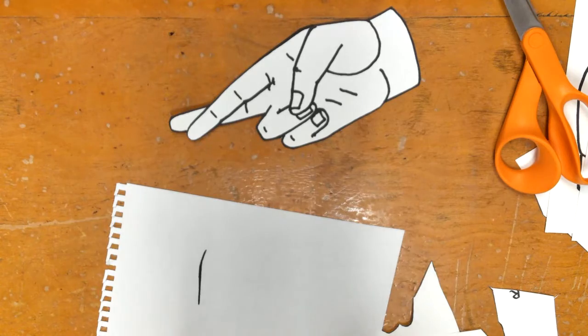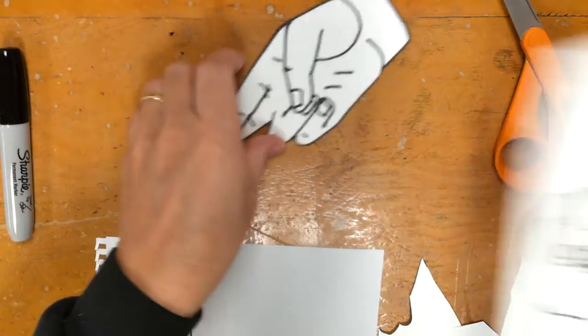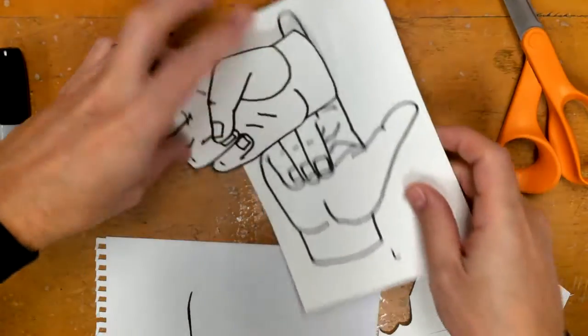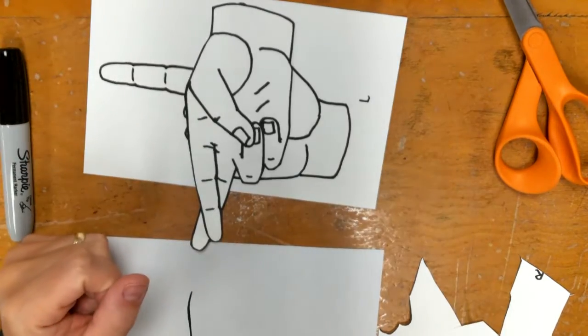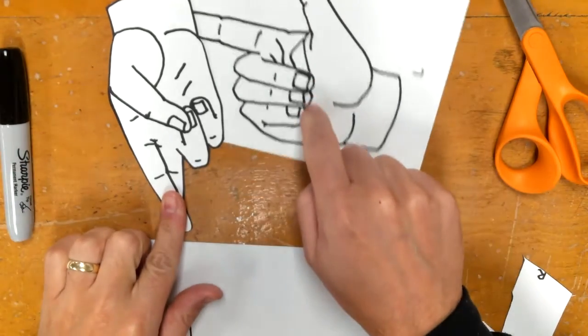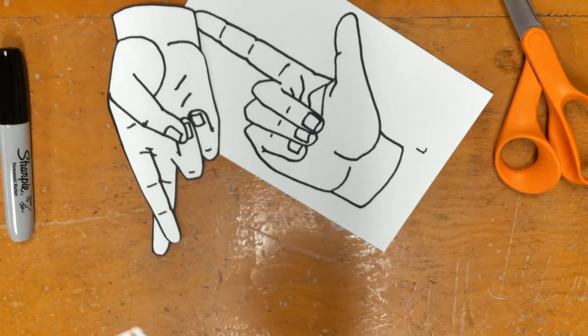What you don't want to do and what I had other students do the other day was they cut out their hand and then they decided that this was a good piece of paper to do that edge with. We don't want to get anything on here.